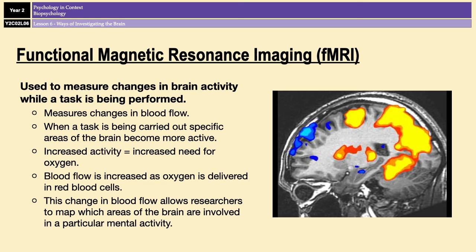This allows researchers to map areas of the brain involved in a particular mental activity, and it produces an image like the one you can see on the screen, with different colours indicating activity in different areas.